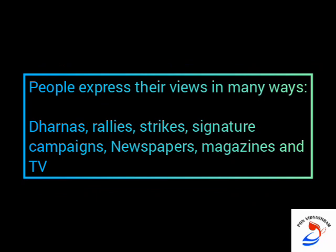People express their views in different ways to make the government understand what actions to take. These include dharnas, rallies, strikes, signature campaigns, and more. Things that are unfair and unjust are also brought forward. Newspapers, magazines, and TV also play a role in discussing government issues and responsibilities. These are the ways people show their protest against actions of the government that cannot be accepted.